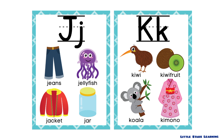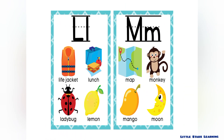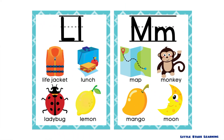J is for jeans, jellyfish, jacket, and jar. K is for kiwi, kiwi fruit, koala, and kimono.